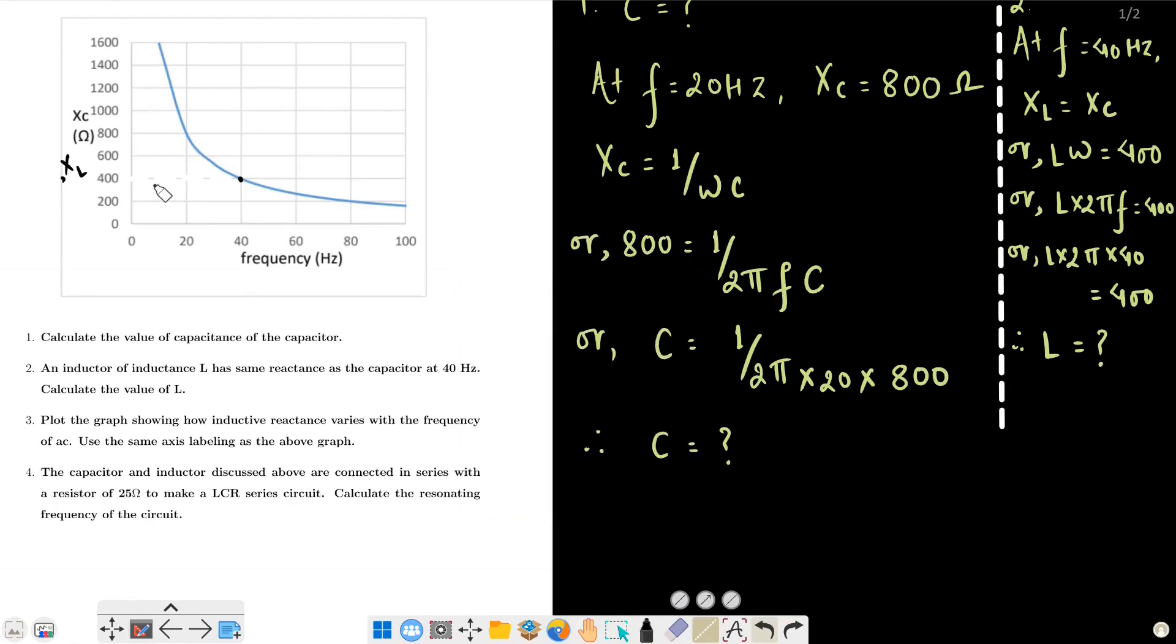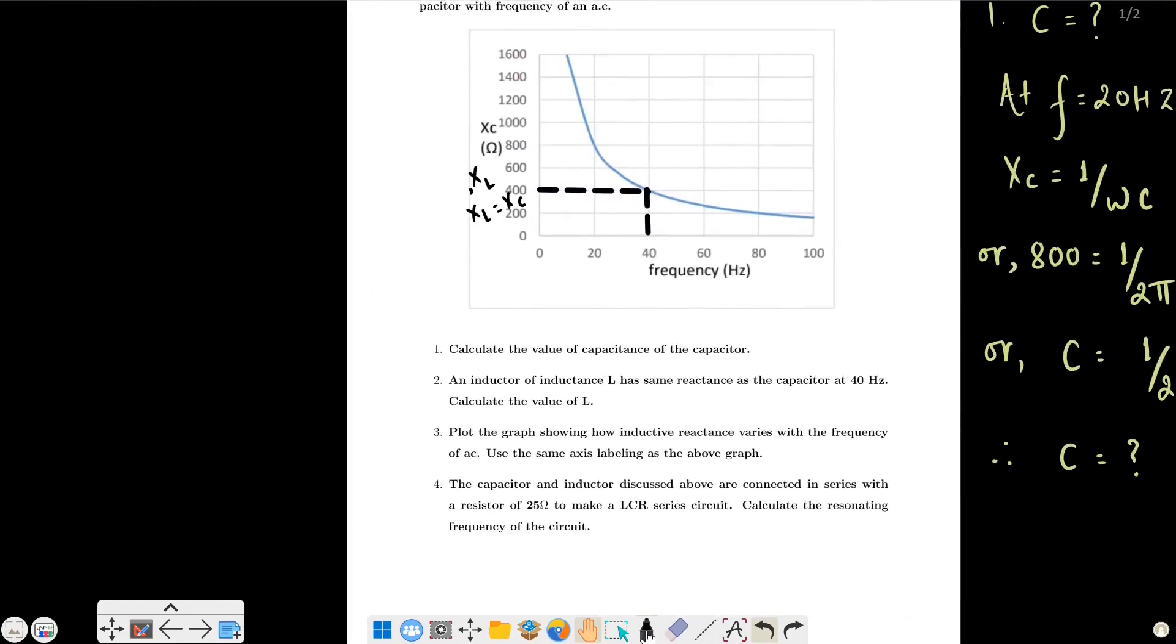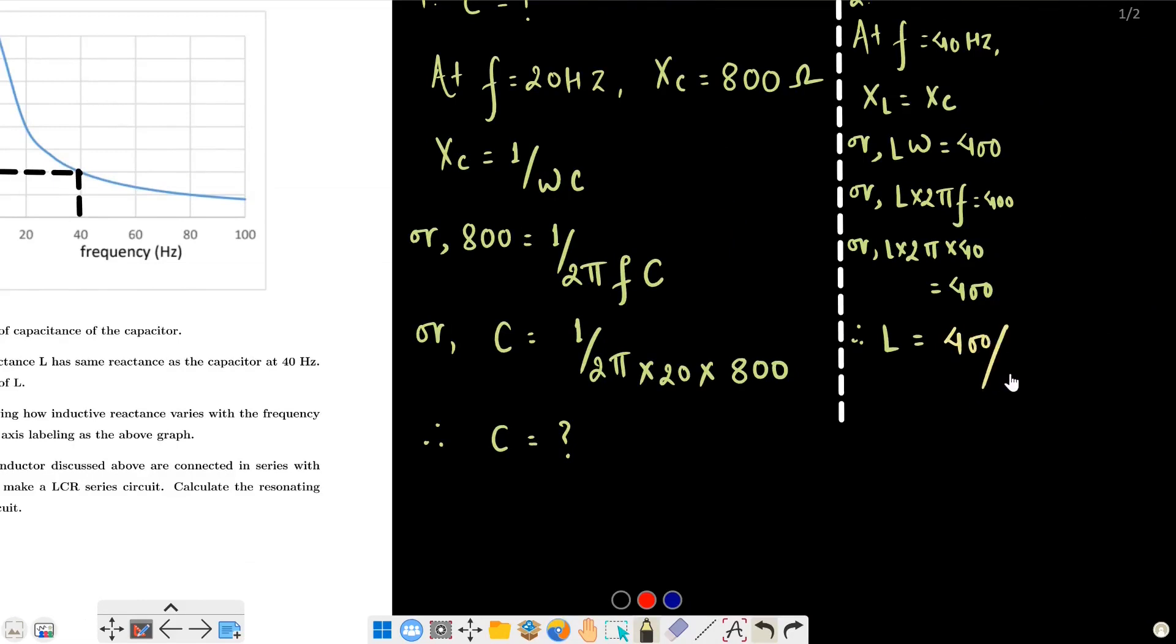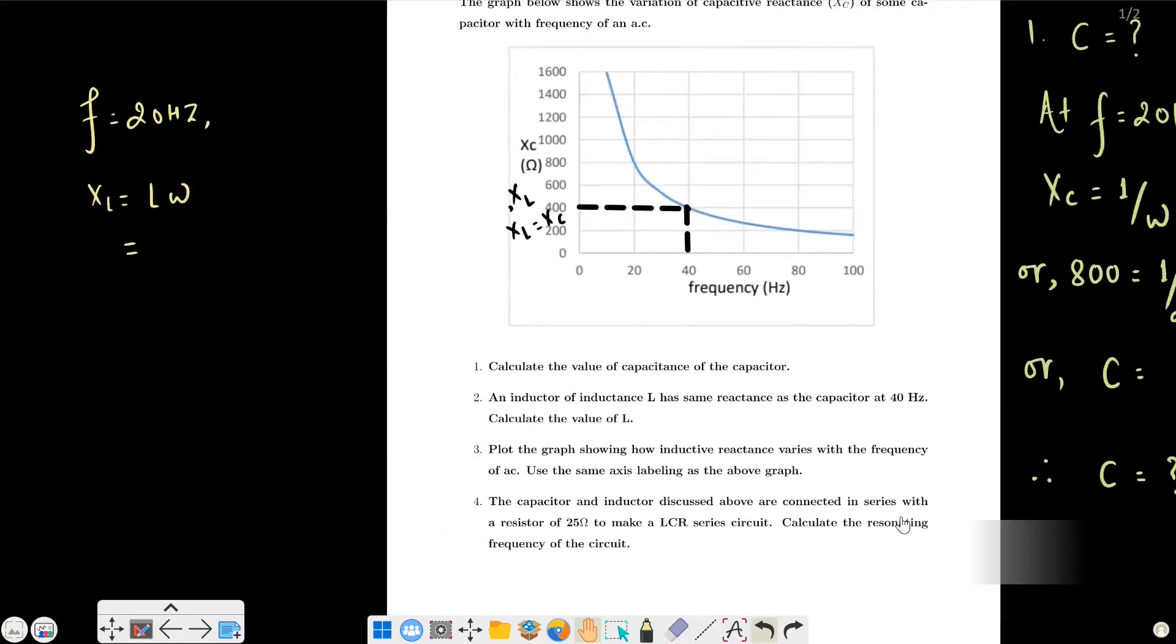At this point X_L equals X_C. At frequency 20 Hz, calculate X_L value. X_L equals L omega, so L equals 400 divided by 2 pi into 40. L equals 400 divided by 2 pi into 40 equals 1.59 henry.